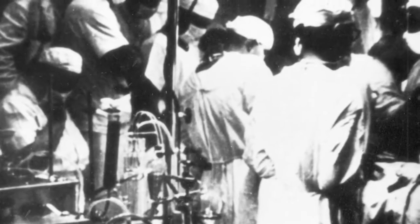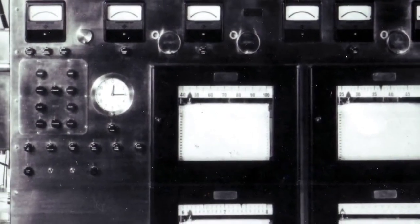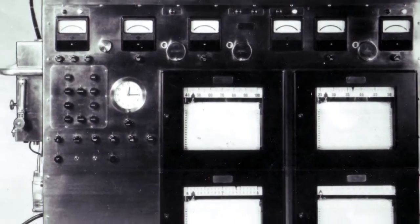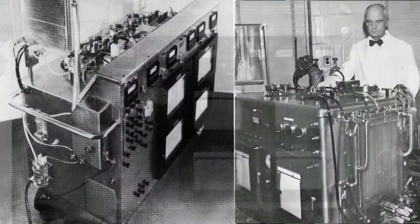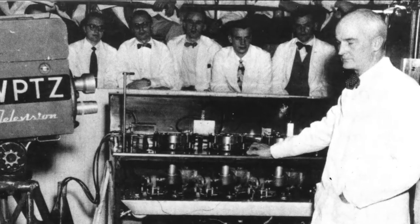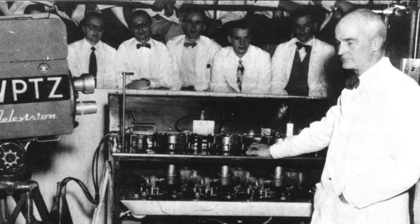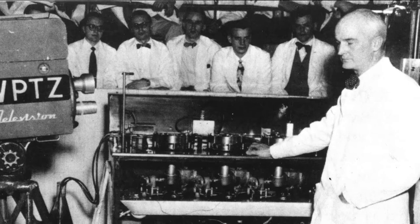These early animal experiments allowed Gibbon to test different types of pumps and oxygenators to improve performance. However, the machine damaged blood cells and most cats lived no longer than 23 days after surgery. From 1945, Gibbon and other researchers began to refine the methods using experiments in dogs. Although initial survival rates were low, these experiments revealed the need to add filters to the heart-lung device to prevent blood clots, and to apply suction to the heart to prevent air from entering it during surgery.